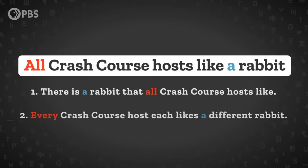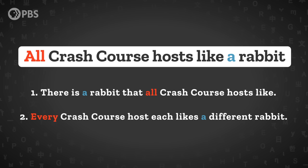This sentence actually has two different meanings: one, there is a rabbit that all Crash Course hosts like, or two, every Crash Course host each likes a different rabbit. It would be hard to write down this kind of meaning in a definition, let alone describe this interaction between 'all' and 'a' in a few words. But using symbols lets us see these relationships more clearly, and lets us see when similar functional meanings are expressed in different languages. We've only explored two function words here — there's an extensive set of notation we can use to explore other function words, and some of them are still being figured out.